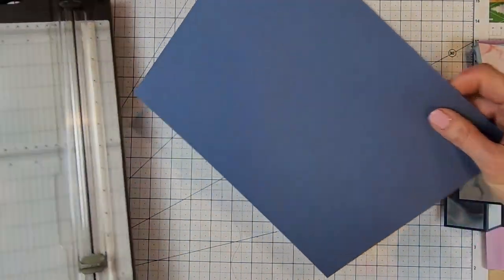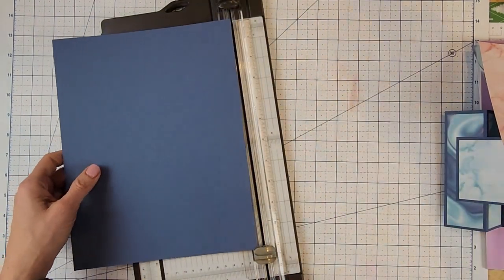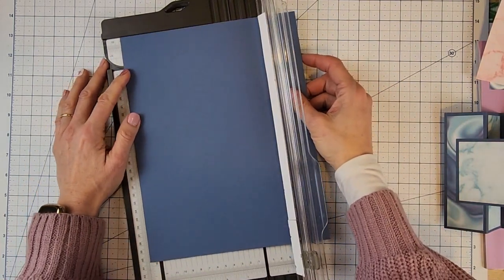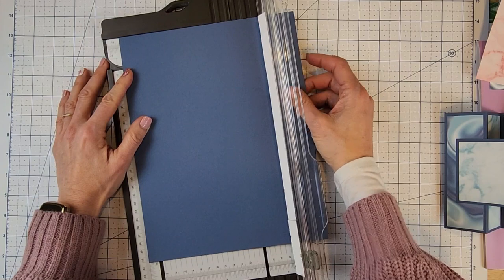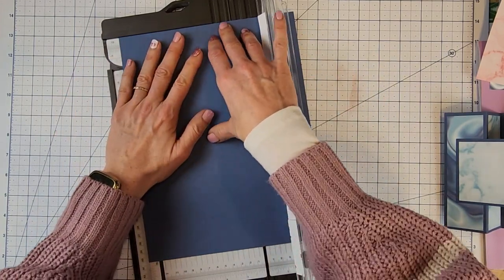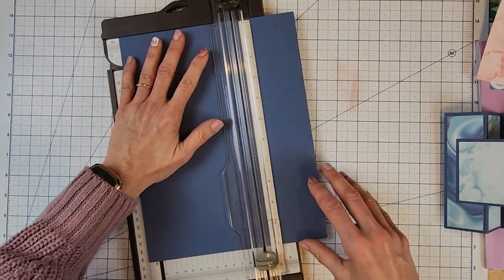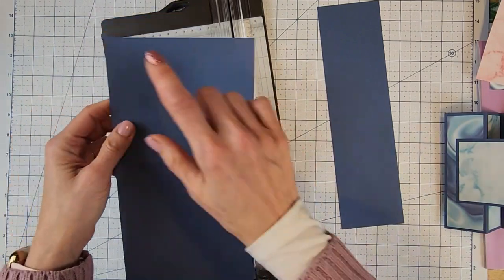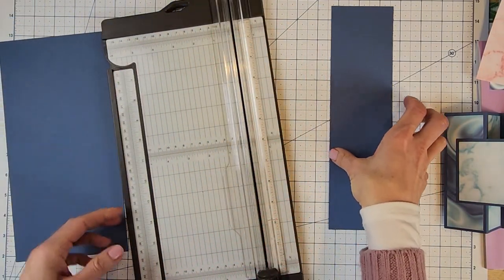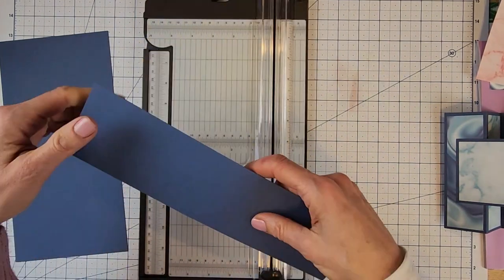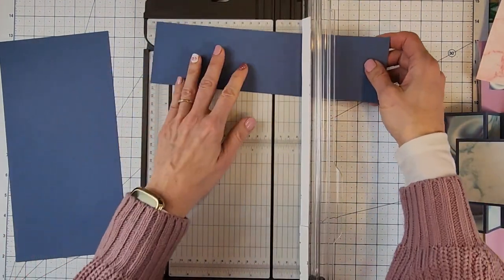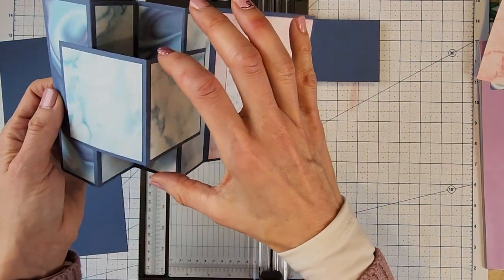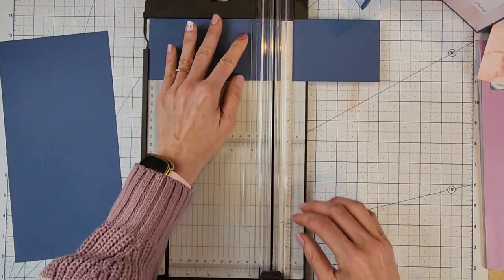So from my 8.5 by 11 inch sheet, I want to cut this down to 5.5 by 11 inches. It's a little different than your basic A2 size card, although it will fit into an A2 size envelope, but it will be a bit bulky. So we cut that down to 5.5 by 11. And then you're left with this strip here, which we're going to cut down to 6 inches. And that will be for this piece right here. So let's cut that.